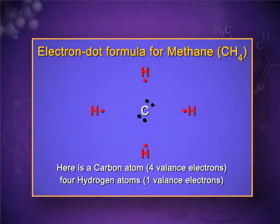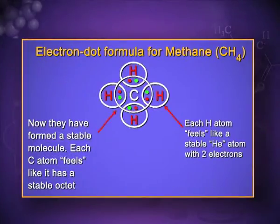Let me take another example — methane — to show the electron dot structure for covalent bonding. Carbon has four electrons in the valence shell and each hydrogen has one electron. They form a covalent bond by sharing electrons. The red dots represent the single electron of each hydrogen, and the black dots represent the four electrons of carbon. By sharing these electrons, the duplet of hydrogen is complete and the octet of carbon is complete — both are in a stable state.